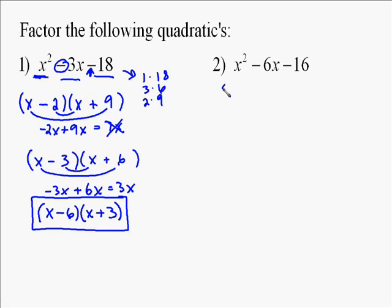For the other one, we start the same way. We put the x, parentheses, x, parentheses, because we know x times x is x squared.